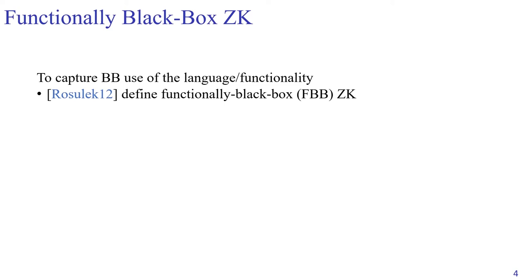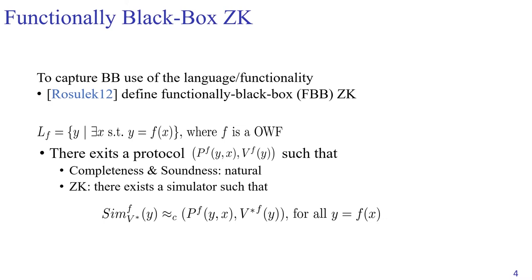To capture this task formally, Resulac defines the notion of functionally black box zero knowledge (FBBZK). For the range membership language, FBBZK requires the existence of a protocol where both parties have only black box access to f. The statement is the image y, and the prover additionally holds the pre-image x as a witness. The prover wants to prove that y is indeed in the range of f. Completeness and soundness are defined in the natural way. For the zero knowledge property, it is the same as the traditional one — the only difference is both parties have black box access to f in the real execution. It is not necessary to require that the simulator makes only black box access to f; you can give the code to the simulator.